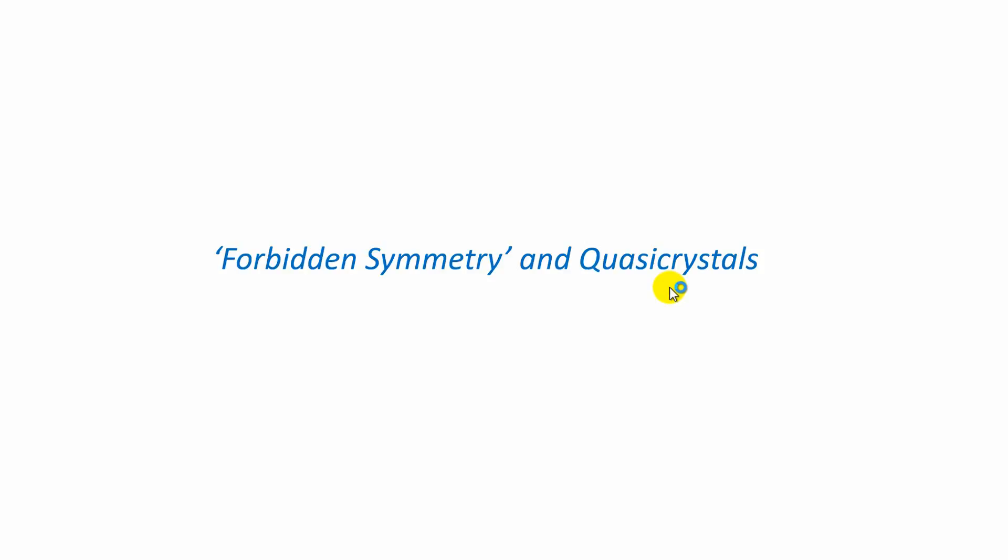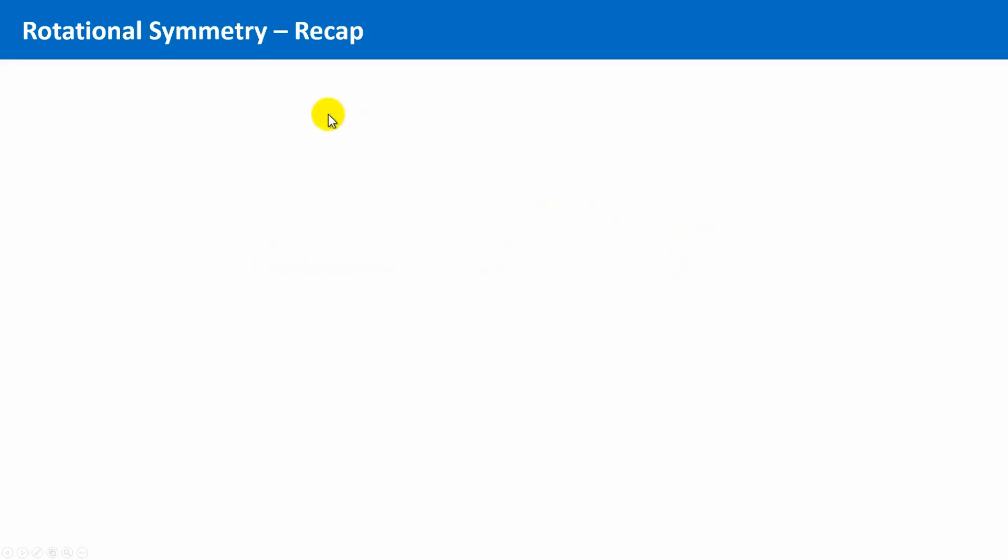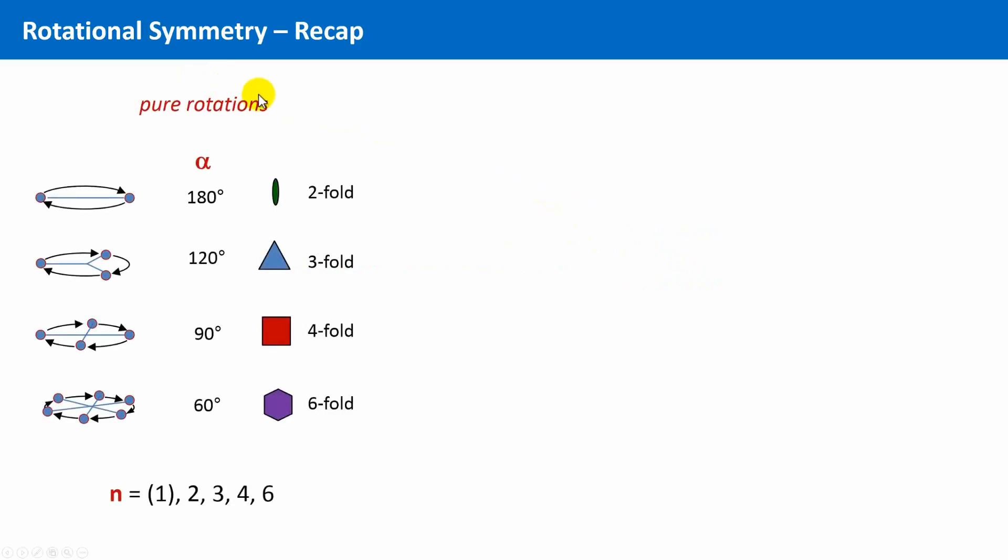During the course, we already spoke several times about the restrictions of rotational symmetry that can occur in crystals. To recap, in crystals the order of rotational symmetry is restricted to 1 to 4 and 6. This is valid concerning the pure rotations, and this is also valid if you look at screw axes, which also can only have orders from 1 to 4 and 6. This was a 100% accepted doctrine in crystallography, a paradigm.